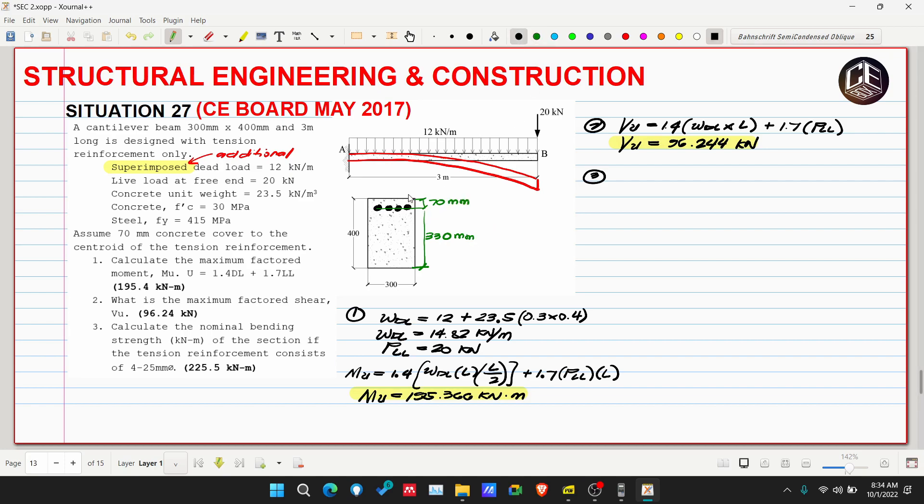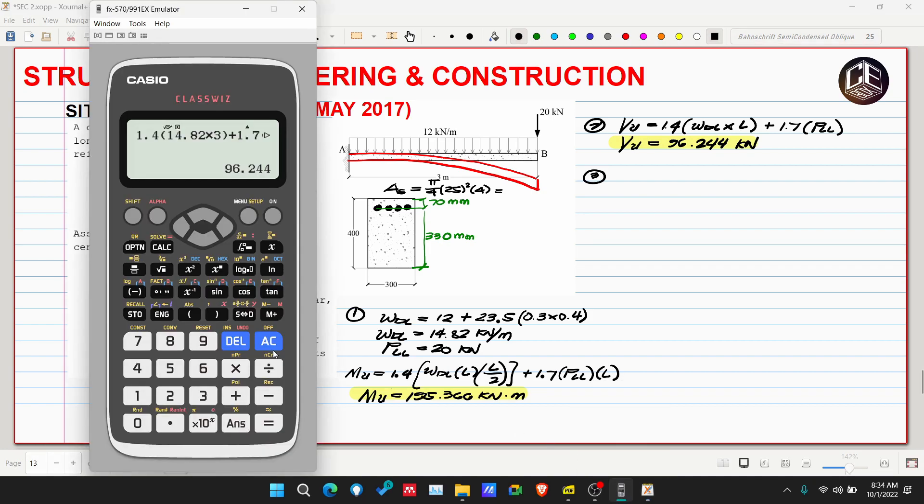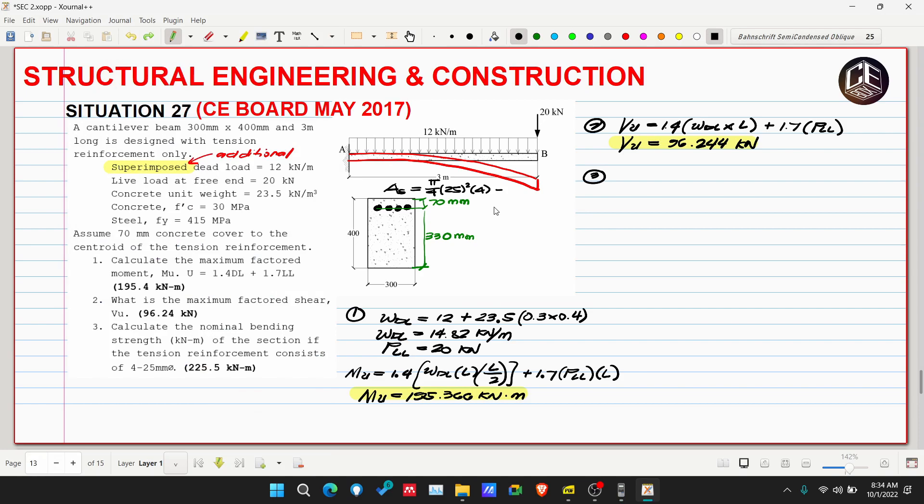Let's also solve for our As, or area of steel. This is pi over 4 multiplied by 25 squared multiplied by 4. So 25 squared multiplied by 4, divided by 4. So our As is 625 pi millimeters squared.